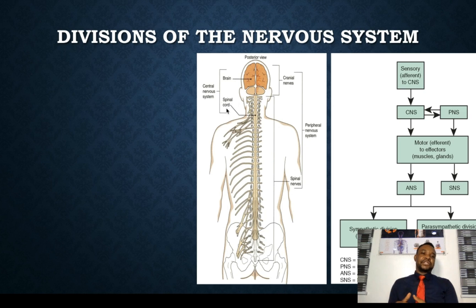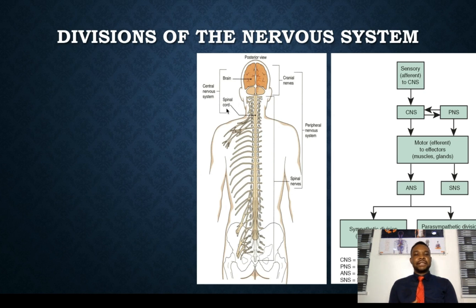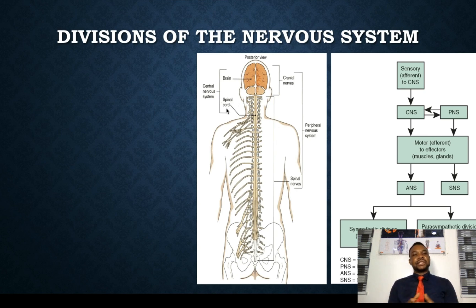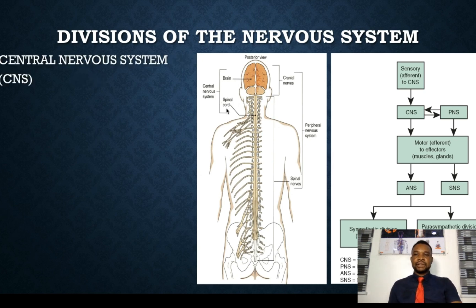The autonomic nervous system is the part of the nervous system that innervates the cardiac muscles and the smooth muscles — they are under autonomic control. The autonomic nervous system is further divided into the sympathetic and the parasympathetic divisions. The sympathetic division is the part that prepares us for fight and flight response, while the parasympathetic is responsible for rest, conserving energy, and eating. The somatic nervous system innervates the skeletal muscles to ensure that movement is coordinated.